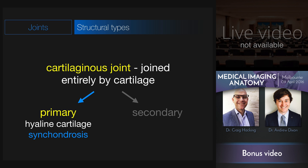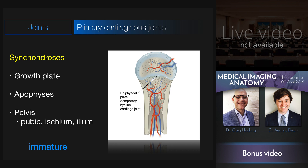The primary cartilaginous joints are fused by hyaline cartilage and are termed synchondroses. Synchondroses are almost always found in the developing or immature skeleton and exist between separate centres of ossification, often within the same bone. For example, the epiphyseal plate, or growth plate, is a primary cartilaginous joint between the ossification centre and the primary bone. Similarly at apophyses, which are secondary centres of ossification associated with tendon insertions, the same kind of thing happens.